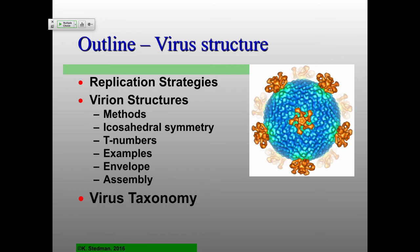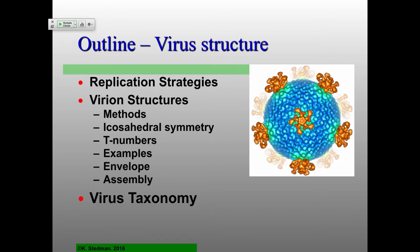So it's really just math in terms of why virions have these particular kinds of structures. I'll talk about triangulation numbers — a nice way of understanding how these icosahedrally symmetric structures come together — and look at some examples of envelope and assembly. We may or may not get to virus taxonomy. It's about 2,000 pages and still incredibly controversial. The idea is to move away from disease-based naming, since many viruses don't cause disease.